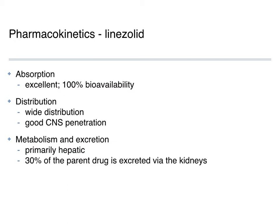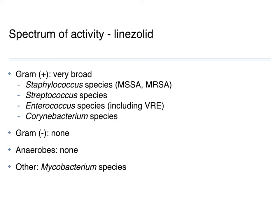Spectrum of activity — you could call this the 'Rolls-Royce of gram-positive agents' compared to vancomycin being the Cadillac. It covers MSSA, MRSA, Strep, Enterococci — and importantly it has activity against vancomycin-resistant strains of enterococci, so slightly better gram-positive coverage than vancomycin. Also covers Corynebacterium. No gram-negative activity and really no anaerobic activity. As a niche, this drug does have some activity against mycobacteria and has been used to treat drug-resistant Mycobacterium tuberculosis as a second- and third-line agent.